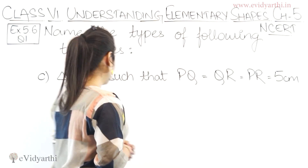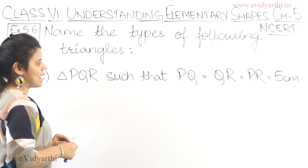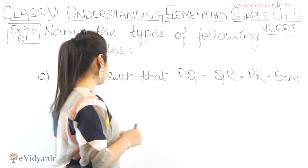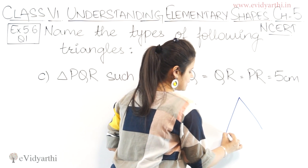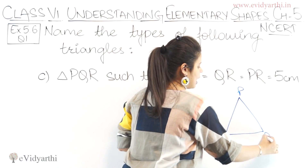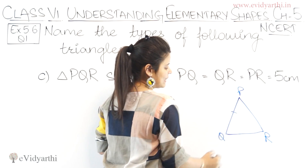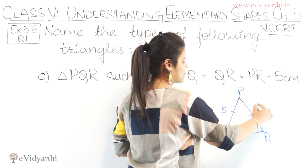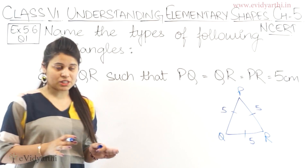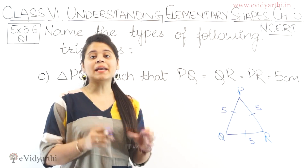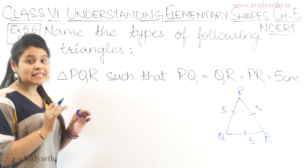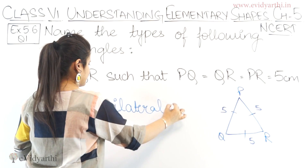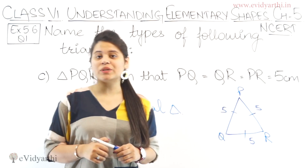Coming to part C, we have triangle PQR such that PQ = QR = PR = 5 cm. This means all 3 sides are equal to 5 cm. Since all 3 sides are equal, this is an equilateral triangle.